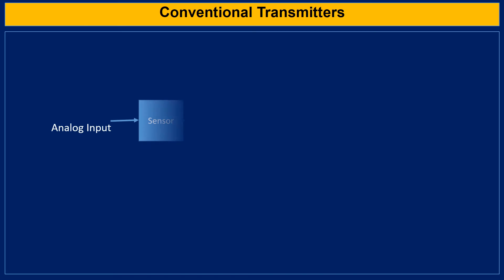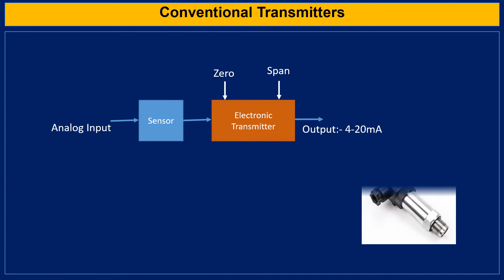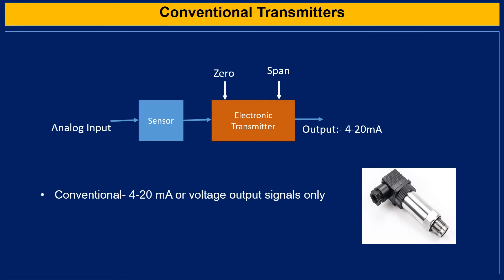A conventional transmitter is a set of electronic elements used for transmitting the standard instrumentation signal. In these transmitters, the operator or control system can only deal with the conventional 4 to 20 mA or voltage signal. There are no additional capabilities in conventional transmitters like those found in smart transmitters.